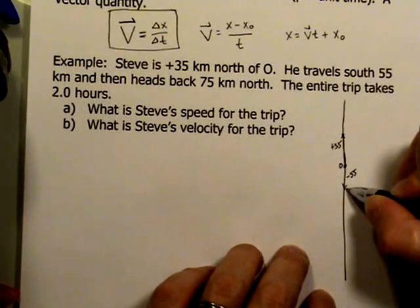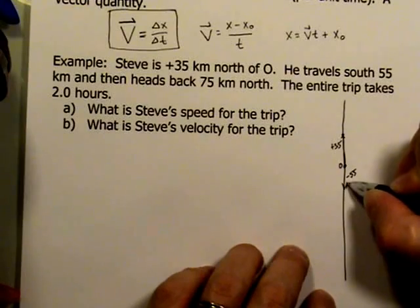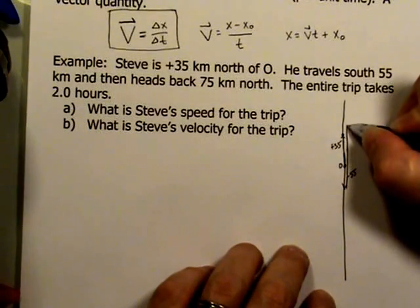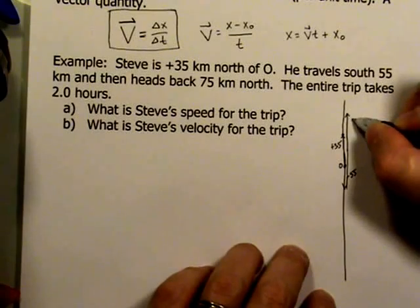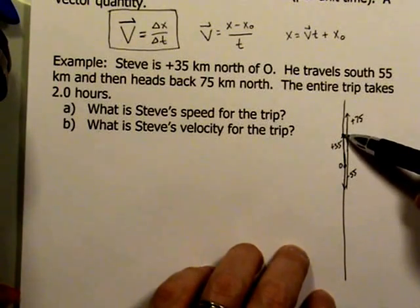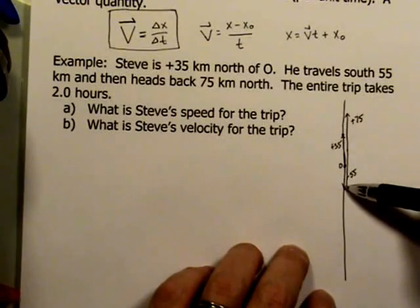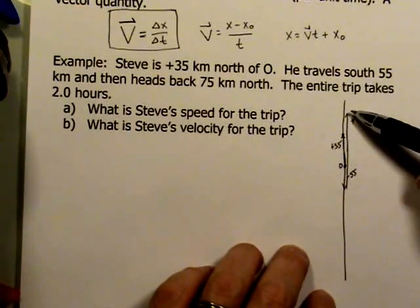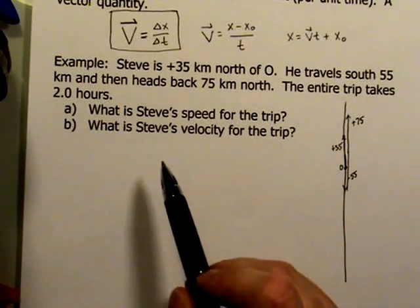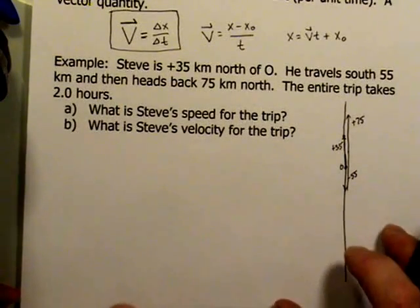we'll have him travel 75 kilometers back to the north. Okay, so we started north of the origin, but we traveled south by 55 and then traveled 75 back to the north. And the question is asking us for both the speed and also for the velocity of the trip.